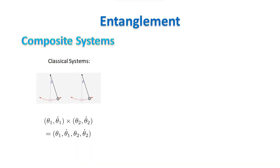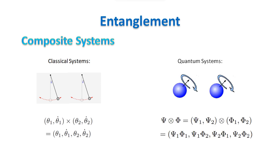For classical systems, the state of a composite system is the Cartesian product of the states of the components. You just put side to side the component states and they do not mix each other. For quantum systems, the state of a composite system is the tensor product of the states of the components. The component states get mixed up with each other, and it is this feature of quantum mechanics that leads eventually to entanglement.